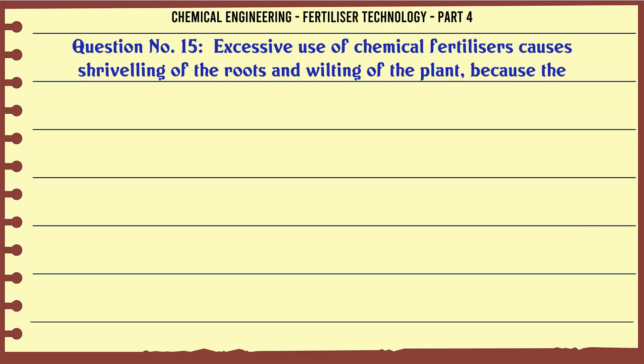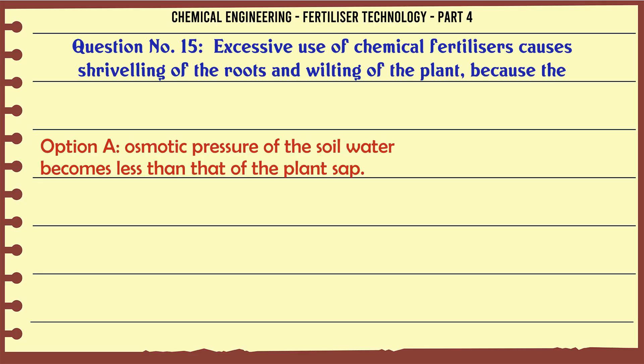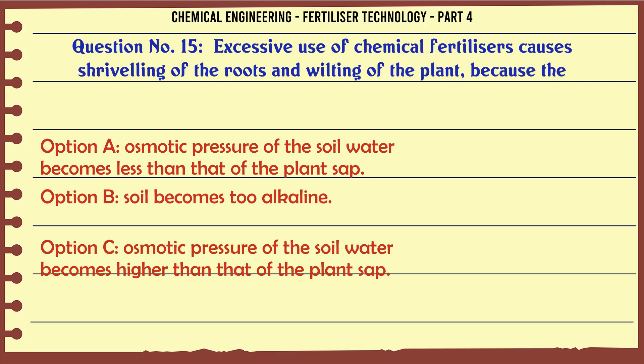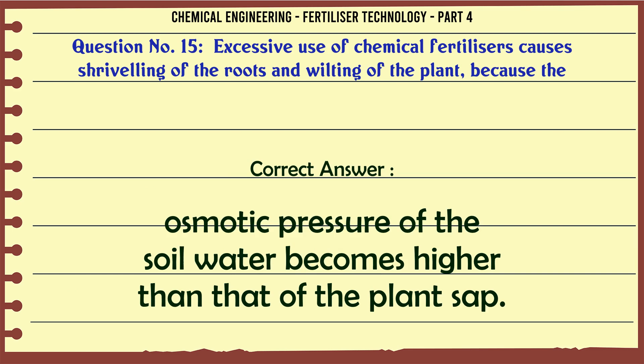Excessive use of chemical fertilizers causes shriveling of the roots and wilting of the plant because: a. osmotic pressure of the soil water becomes less than that of the plant sap, b. soil becomes too alkaline, c. osmotic pressure of the soil water becomes higher than that of the plant sap, d. soil becomes too acidic. The correct answer is: osmotic pressure of the soil water becomes higher than that of the plant sap.